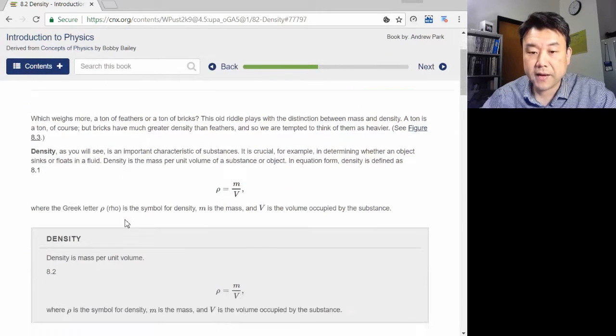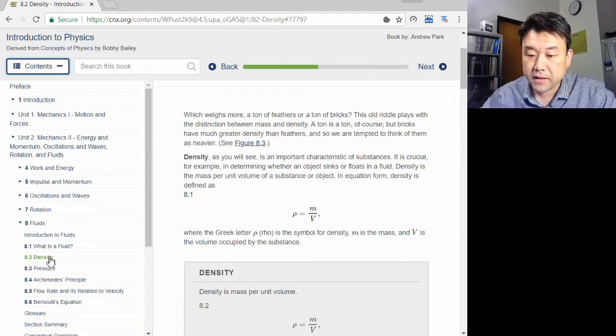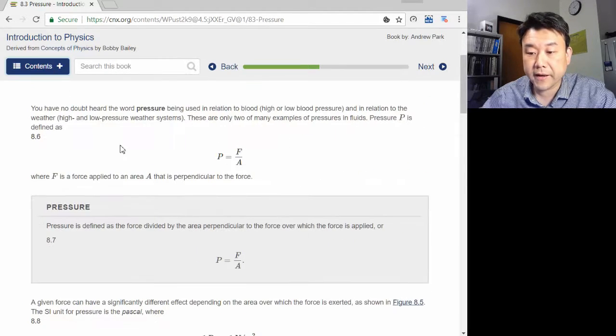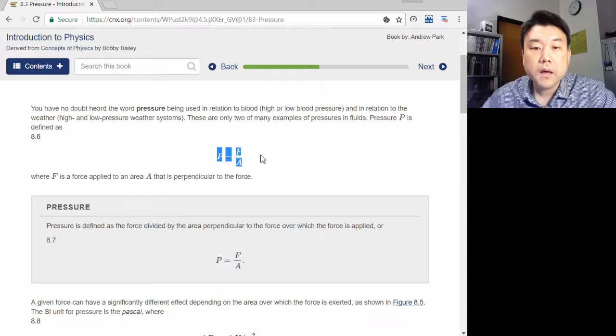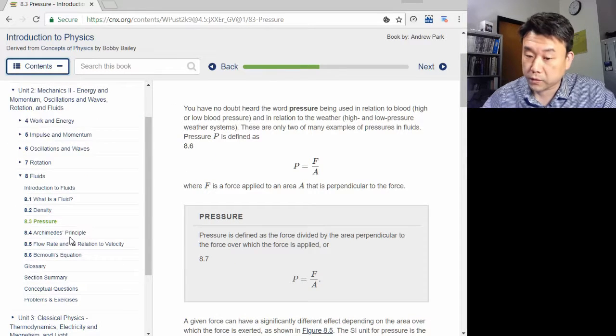The way we make them relevant is by introducing these new quantities of density and pressure. Density is defined as mass per volume and pressure is defined as force per area. This new way of describing mass and force,